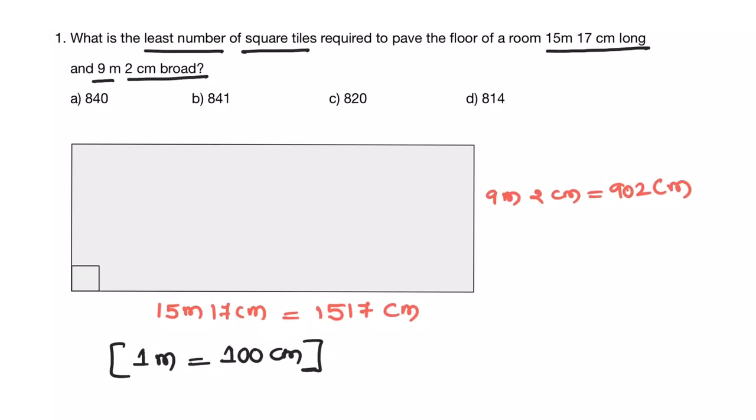We have a room 15 meters 17 cm long, that is equal to 1517 centimeters, because 1 meter is 100 centimeters. So 15 meters is 1500 centimeters. And 9 meters 2 centimeter broad, that is equal to 902 centimeters.